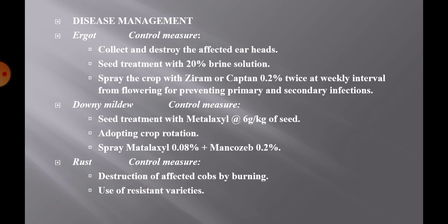For disease management, eargut, downy mildew and rust are the major diseases. Eargut is characterized by droplets of pinkish or light honey-like fluid exuding from infested spikelets of the ear head. To control eargut, collect and destroy the affected ear heads, treat seeds with 20% brine solution, and spray the crop with captan 0.2% twice at weekly intervals from flowering to prevent primary and secondary infections.